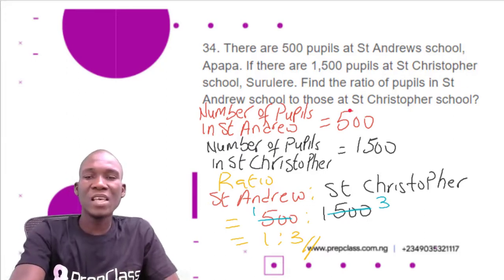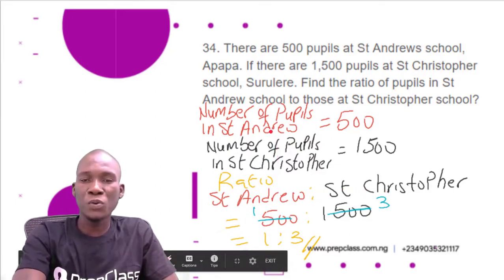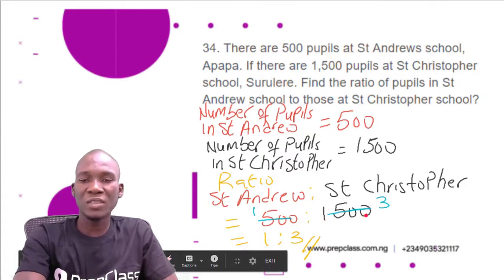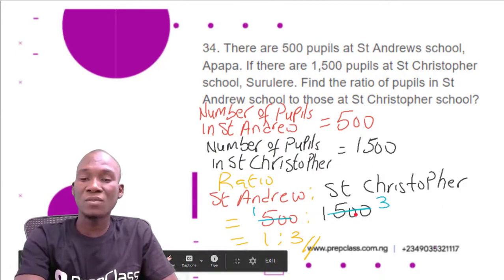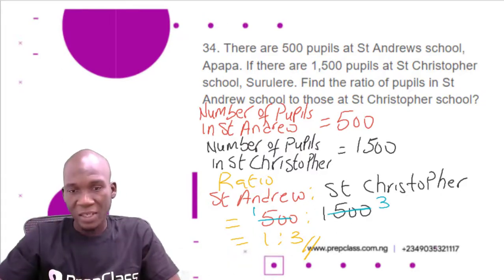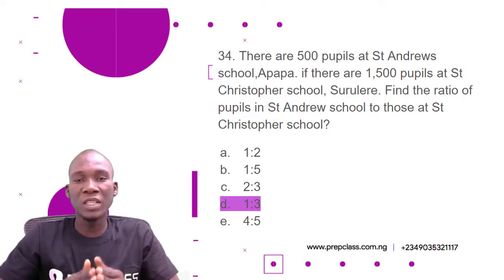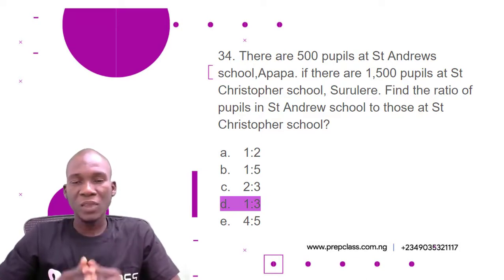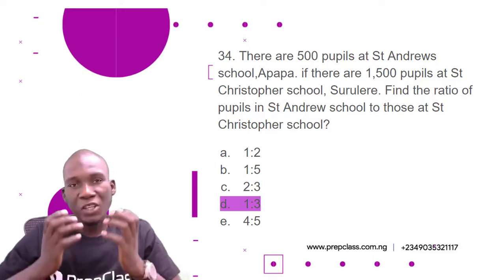Remember, ratio is the same as fraction. So Saint Andrew to Saint Christopher equals 500 to 1500. Since ratio means fraction, we divide: how many 500s in 500? One. How many 500s in 1500? Three. So we get 1:3. The correct option is D: one ratio three.